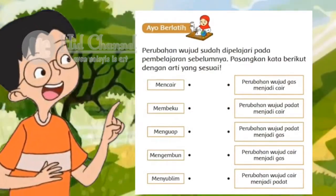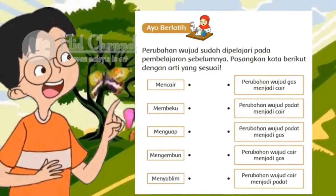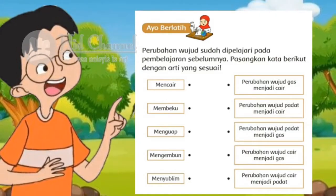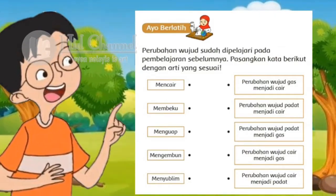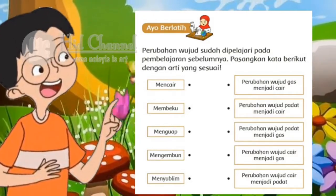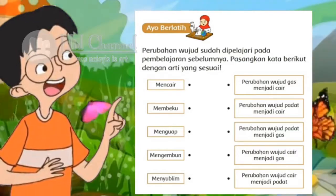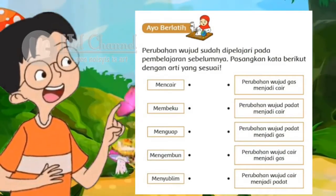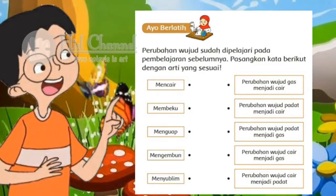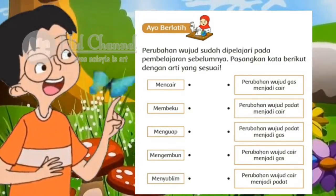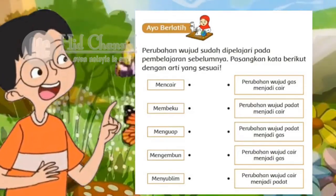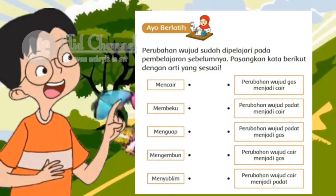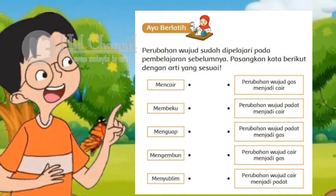Perubahan wujud sudah kita pelajari pada pembelajaran sebelumnya. Sekarang coba kita pasangkan kata-kata berikut sesuai dengan artinya. Yang pertama, mencair, yaitu perubahan wujud dari padat menjadi cair. Kemudian membeku, yaitu perubahan wujud dari cair menjadi padat. Lalu menguap, yaitu perubahan wujud dari cair menjadi gas. Mengembun, perubahan wujud dari gas menjadi cair. Kemudian menyublim, perubahan wujud dari padat menjadi gas. Coba silahkan kalian temukan dan pasangkan dengan artinya.